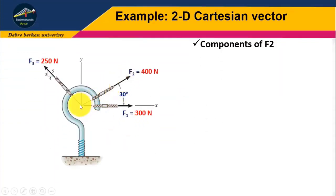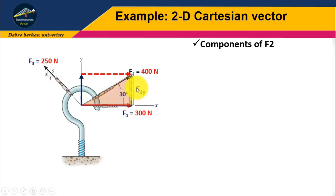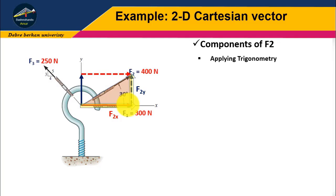As we can see, force 2 is oriented at 30 degrees from the positive X axis with a magnitude of 400 Newton. This is the rectangular component of F2. The vertical component is F2Y and the horizontal component is F2X. Because the force is inclined at 30 degrees, let us apply trigonometry to solve F2X and F2Y.